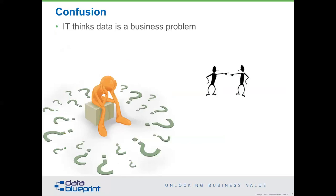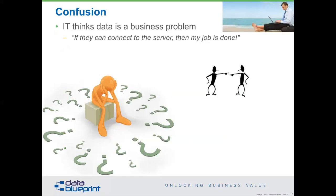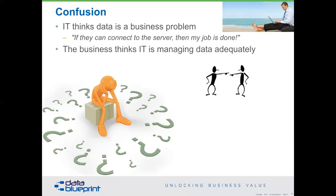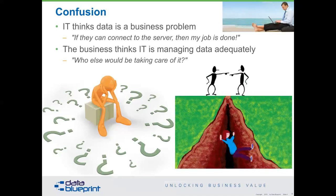IT, even today, often thinks of data as a business problem. They approach the process with the mindset that if they can connect to the server, everything must be fine — my job is done. The business thinks that IT is managing data adequately. Why else would you have somebody with the title Chief Information Officer? Truly, those titles are problematic. Most CIOs are really Chief Information Technology Officers, but they are not managing the organization's data to its highest and best use — not because they're incompetent, but because we're asking them to do so enormously much.